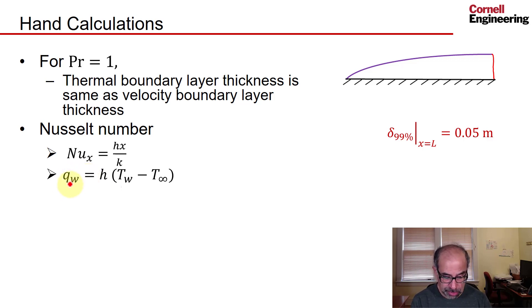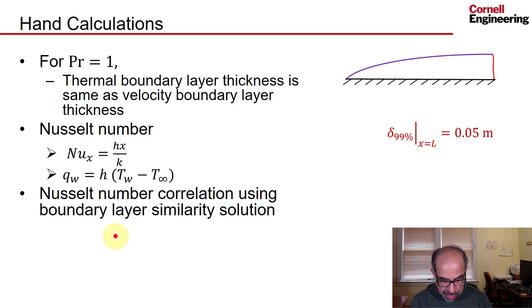Once we have the numerical solution, we will have a solution from boundary layer theory. We have qw, and we have tw and t infinity, which are inputs, so we can calculate h, and from that we can calculate the Nusselt number. There's a Nusselt number correlation that is presented by textbooks, and this comes from using boundary layer similarity solutions similar to the similarity of the velocity profiles.